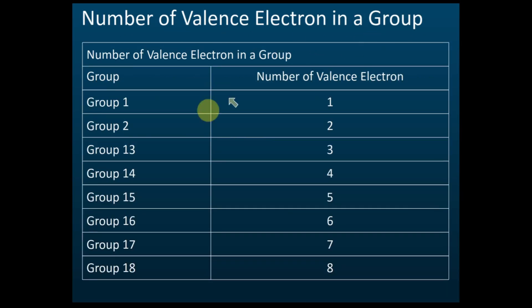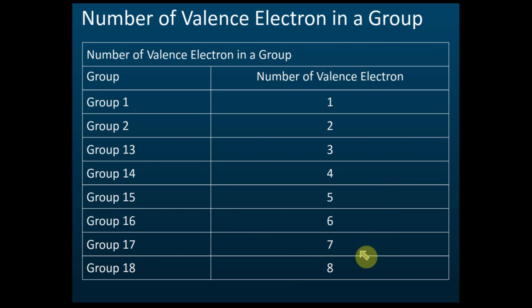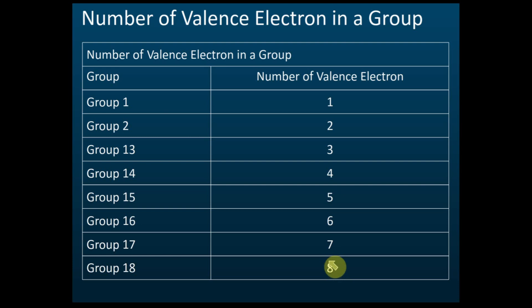To summarize: Group 1 has one valence electron, Group 2 has two, Group 13 has three. From Group 3 to Group 12 — the transition metals — these rules do not apply, as most transition metals have one or two valence electrons and behave differently. This rule only applies to Groups 1, 2, and 13 to 18, where Group 14 has four valence electrons and so on.